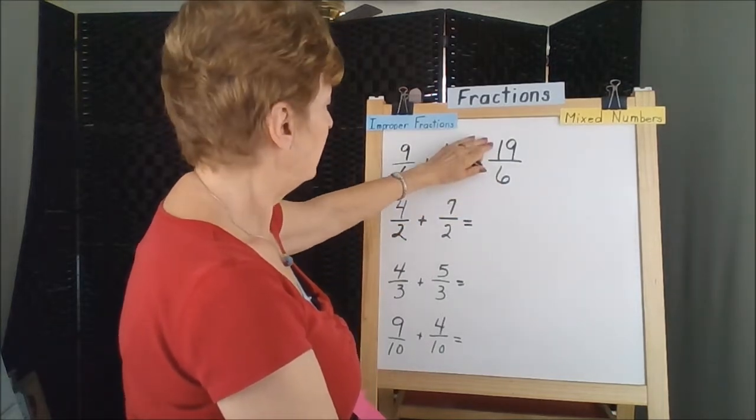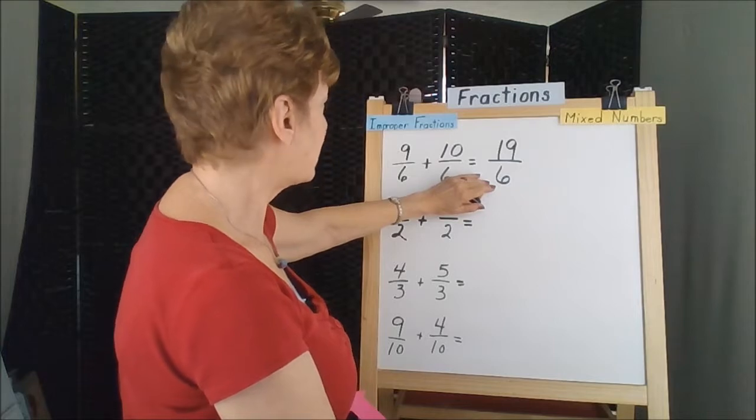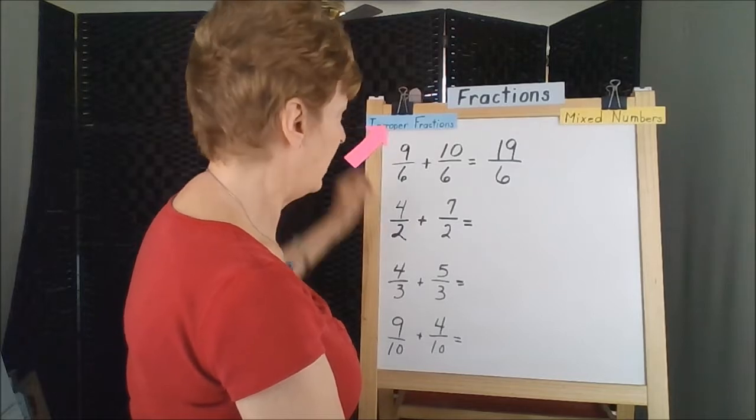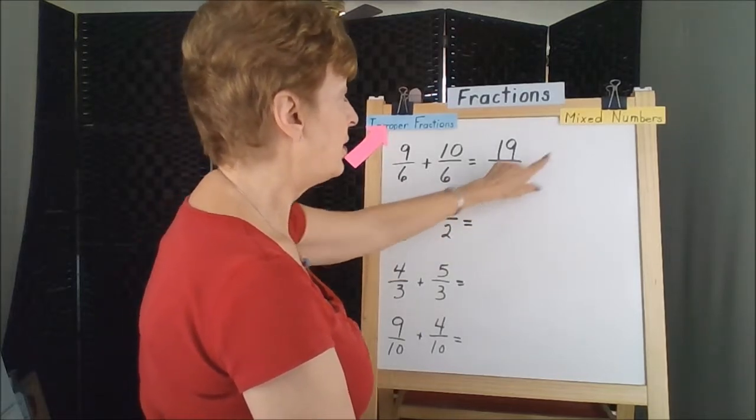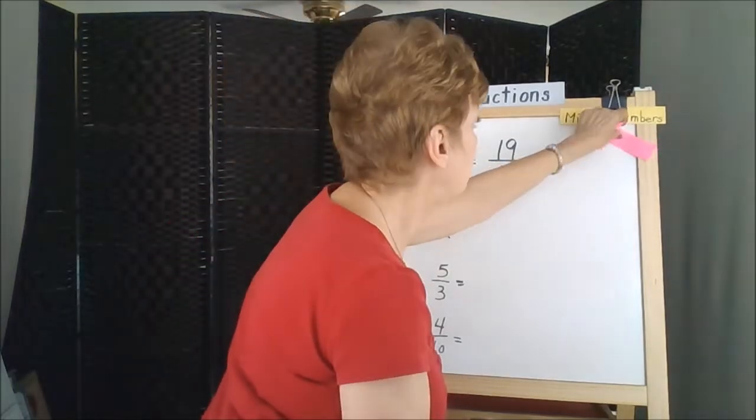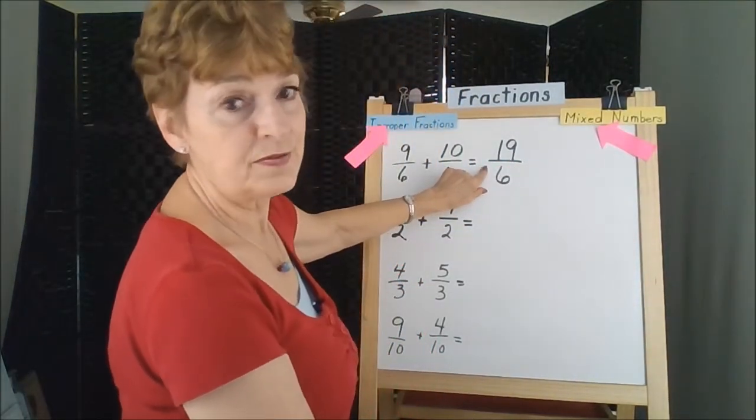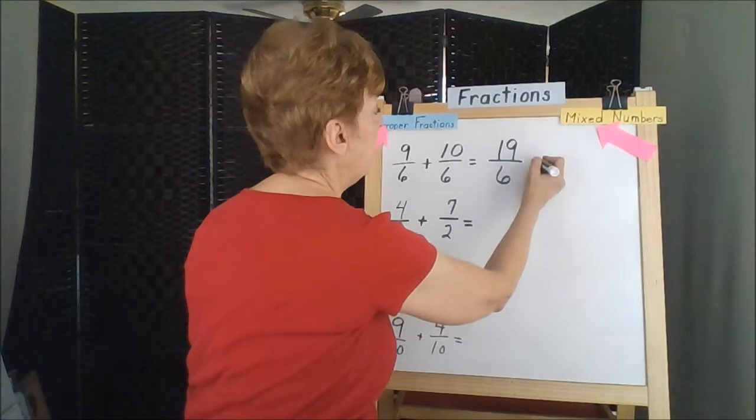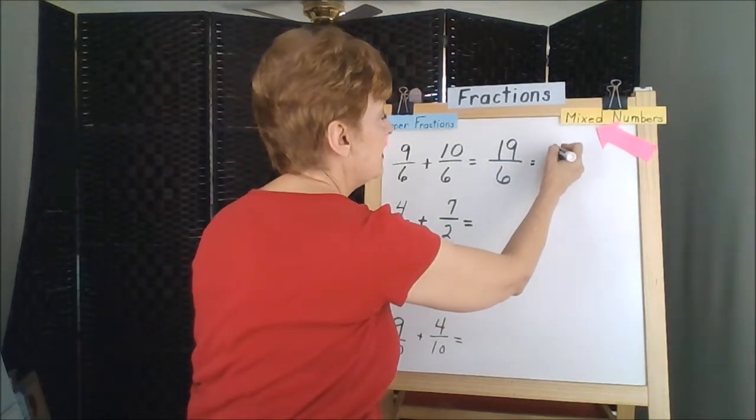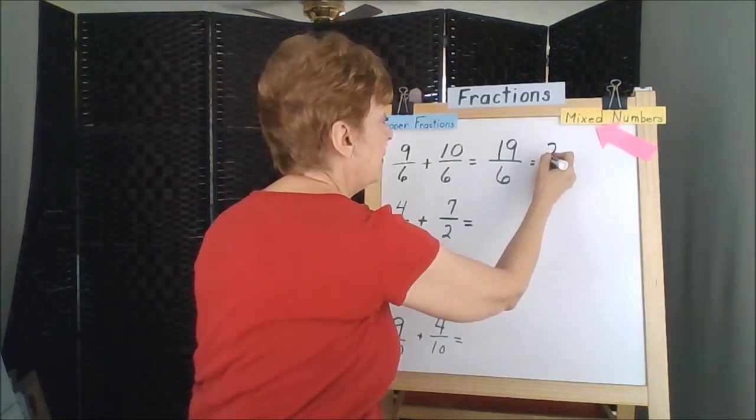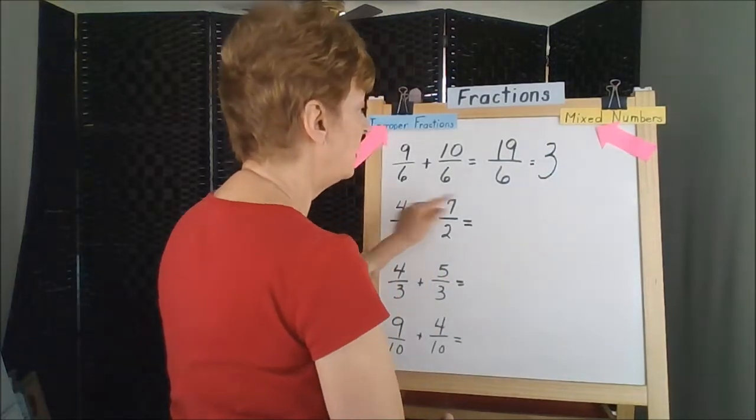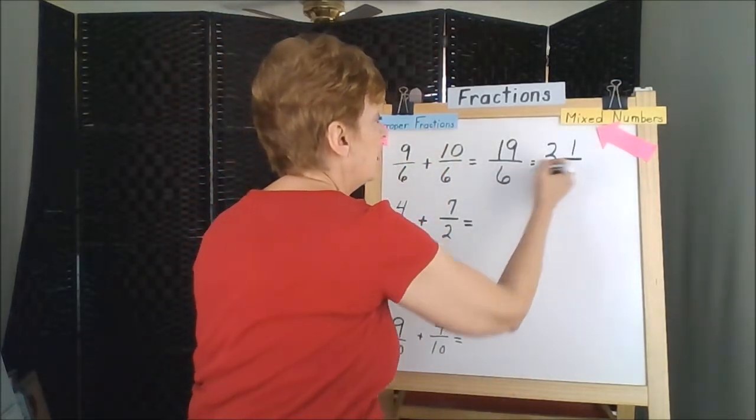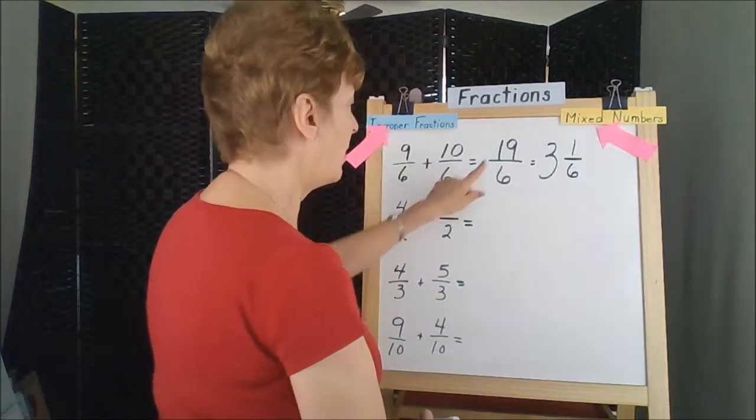19 is bigger than 6. It's improper. We have an improper fraction here. In order to make a mixed number out of it, we're going to change this through division because that's the division symbol. How many times will 6 divide into 19? Well, 6 times 3 is 18, so we're pretty close. So it goes in three whole times because 6 times 3 is 18, and 1 is left over, 1/6. So our improper fraction here was changed to a mixed number.